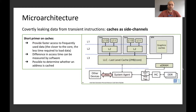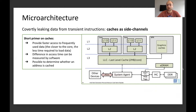A short primer on caches for the CPU. Caches are basically what you can see here on the right side of the picture. There's an L1, L2, and L3 cache. They provide fast access to frequently used data for the CPU. The closer the cache is to the actual core, the less time it requires to load this data. This can be measured by software — it can be determined whether data is in the cache or not.